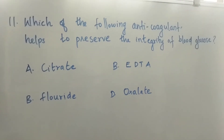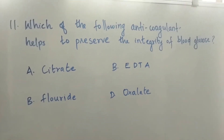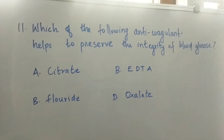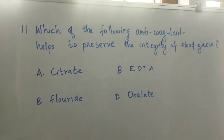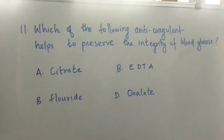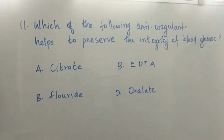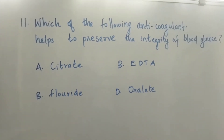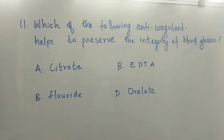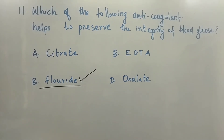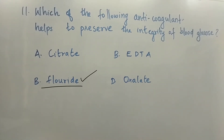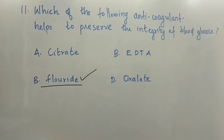Question number 11: Which of the following anticoagulants helps to preserve the integrity of blood glucose? Option A: Citrate. Option B: EDTA. Option C: Fluoride. Option D: Oxalate. The right answer is Option C, Fluoride. Fluoride is the anticoagulant that helps to preserve the integrity of blood glucose.